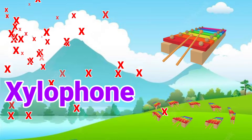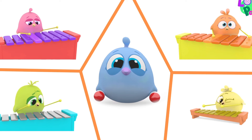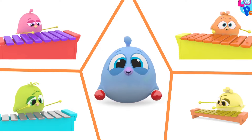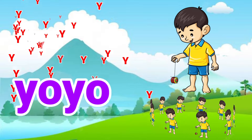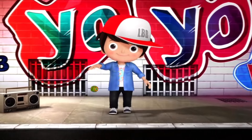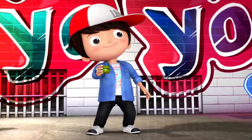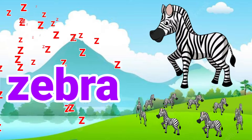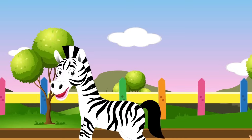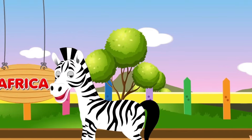X is for Xylophone. Y is for Yoyo. Z is for Zebra. I'm a Zebra from Africa. We'll be right back.